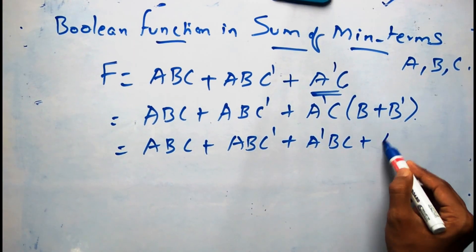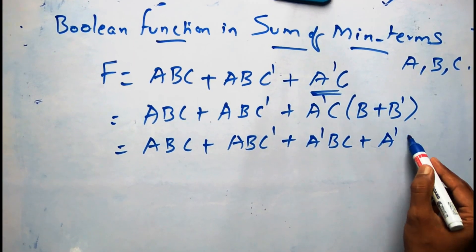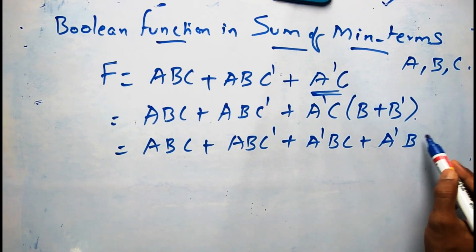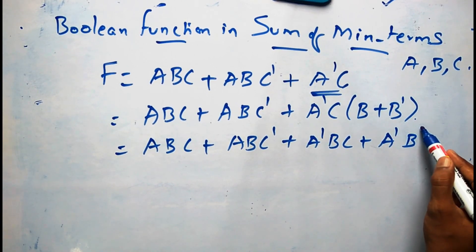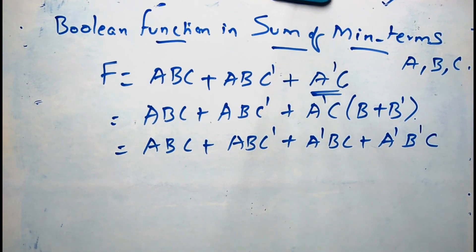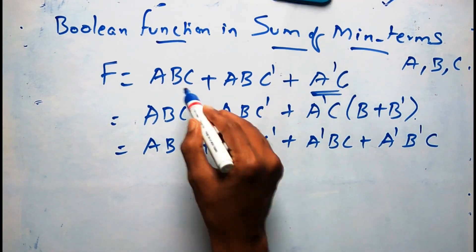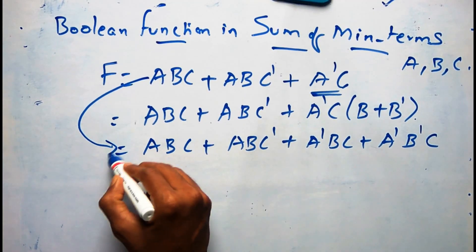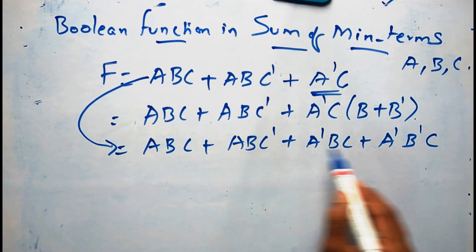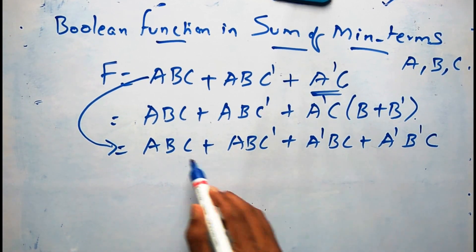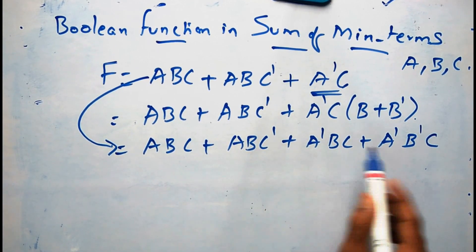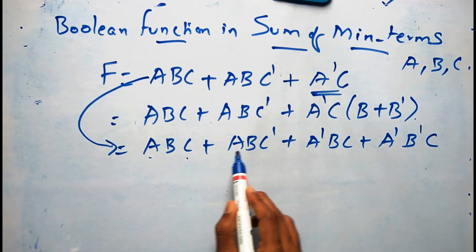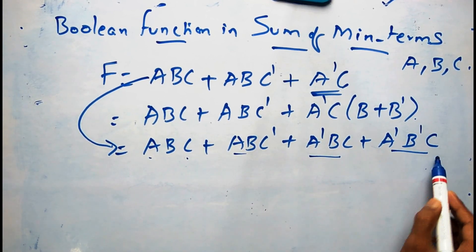When I write this, I will get the terms which are having all three variables: a'bc plus a'b'c. So now the same function is represented with all terms having all the variables — three variables, three variables, three variables.